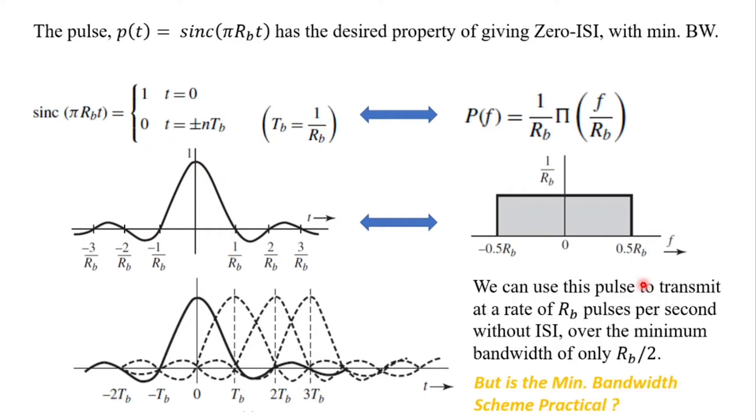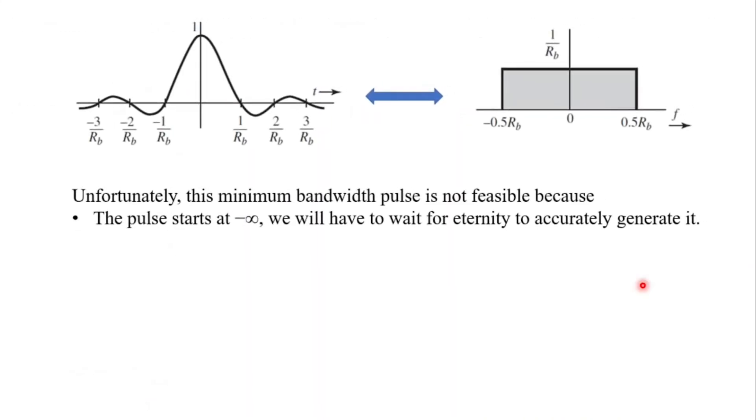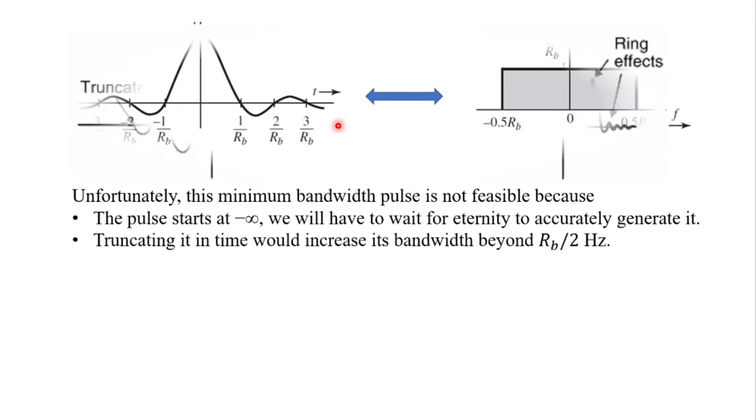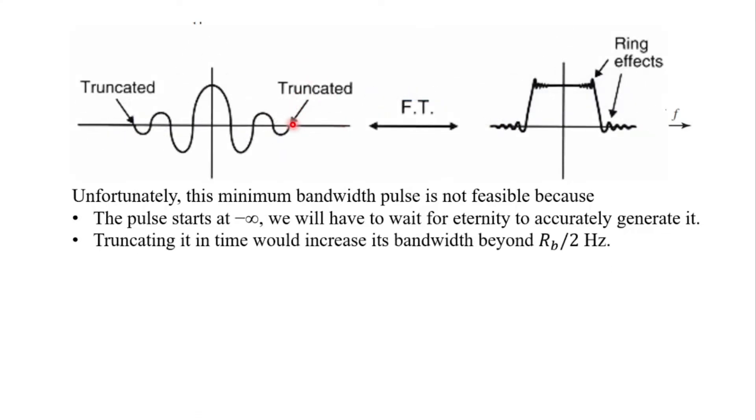But is the minimum bandwidth practical? Let us find out. The minimum bandwidth of pulse is not feasible because the pulse starts from minus infinity and it is until eternity. So we cannot generate that kind of a pulse. Now if we are to truncate it, so truncating it in time would increase its bandwidth beyond Rb by 2. That was the minimum bandwidth criterion for the Nyquist based 0 ISI system.